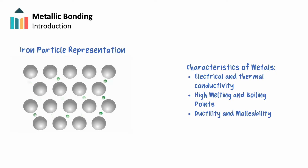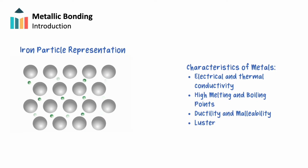Metals are ductile and malleable. This results from the space between each metal cation, allowing the cations to move and slide past one another without disrupting the metallic bonding. Lastly, metals have luster, which results from the ability of the delocalized electrons to interact with light.